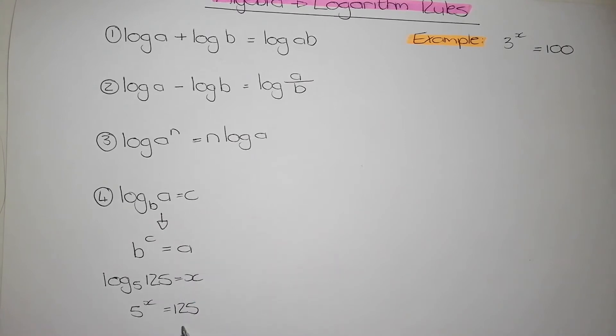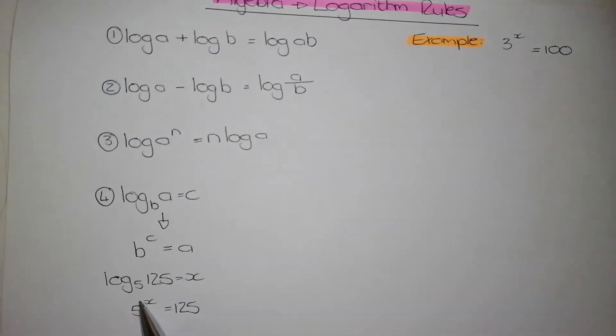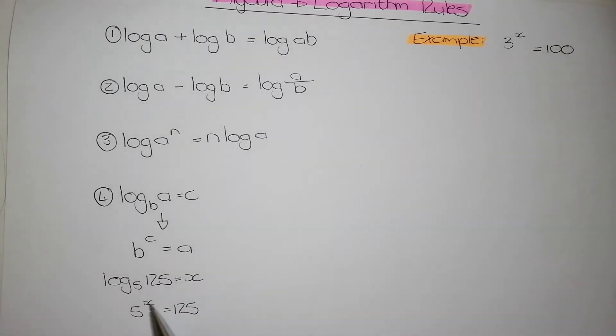This is an example of rule number four. So, if I've got log base 5 of 25 equals x, my 5 becomes my base number, my x becomes my power, and my old base number becomes my answer.